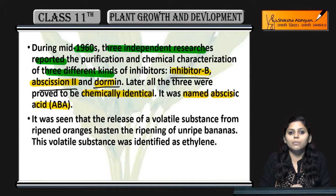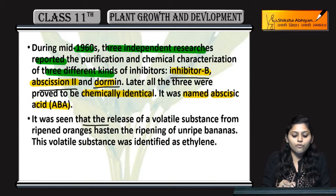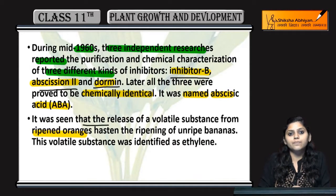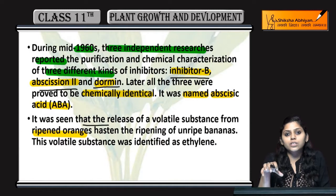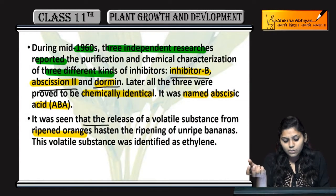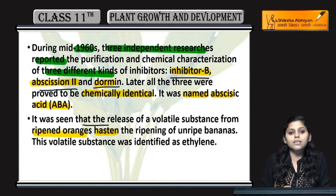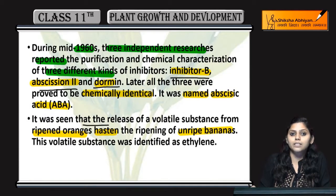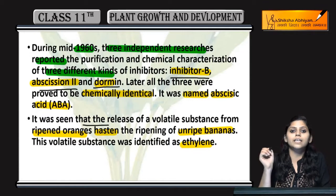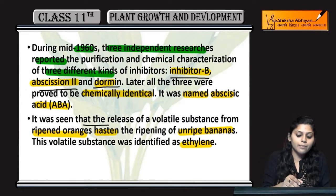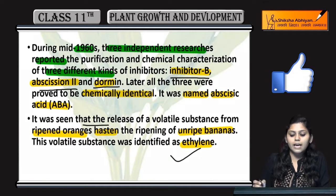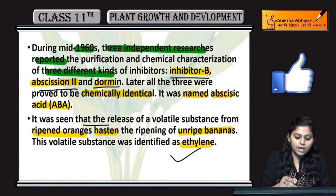It was seen that release of volatile substance from ripened oranges — unse kuch substance release ho raha tha jo hasten kar raha tha the ripening of unripe bananas. Woh substance ko later identify kiya as ethylene — ek volatile substance jo unripe bananas ko ripe kar raha tha.